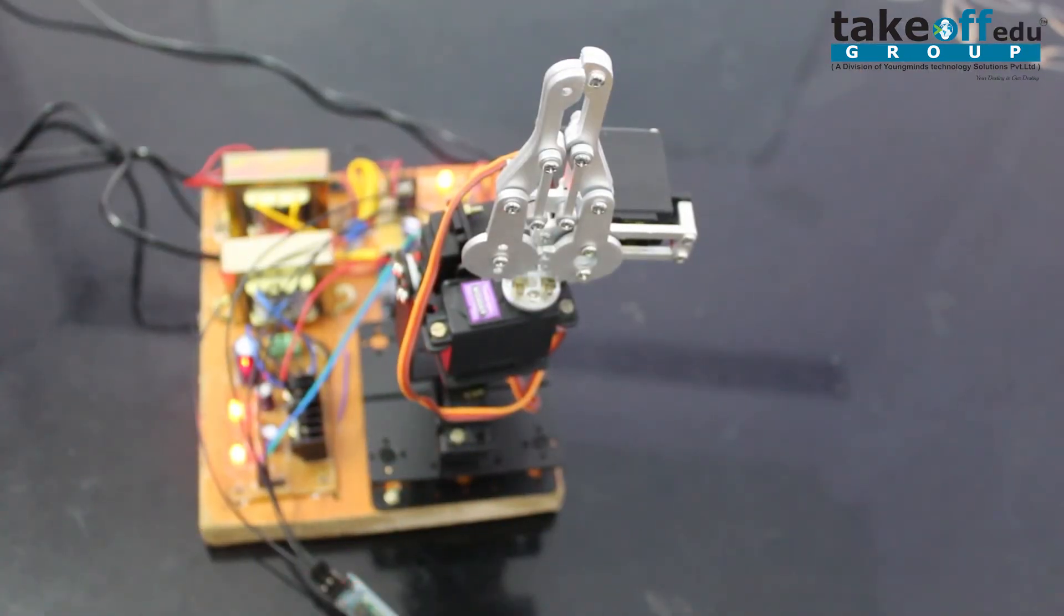Friends, let us see the output of this project. First, we want to connect the robotic arm to our mobile through Bluetooth. We want to connect with Bluetooth module using Arduino blue control app.